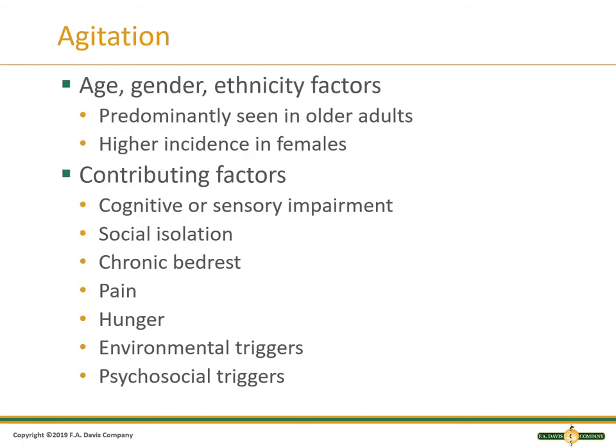We see agitation more in older adults; there's a higher incidence in females. Cognitive and sensory impairment can contribute to increased agitation, as can social isolation, bed rest, pain, and hunger. Those different environmental triggers — hot, cold, a lot of people, close space — and then those psychosocial triggers as well.